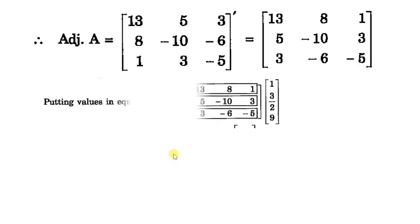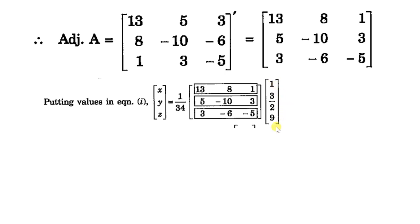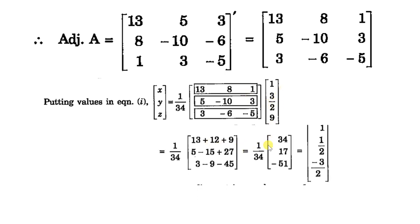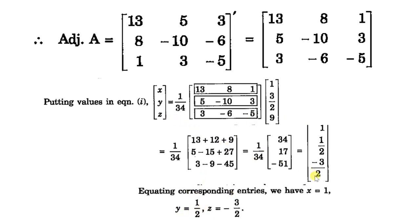Then x equals 1 over 34 times adjoint A multiplied by B. We multiply the 3×3 adjoint matrix by the 3×1 matrix B to get a 3×1 result. Multiplying the first row gives 13 plus 8 times (3/2) plus 1 times 9. Similarly, we get the second and third elements, dividing each by 34. We get 1, 1/2, and minus 3/2. By the equality of matrices, equating corresponding elements: x equals 1, y equals 1/2, and z equals minus 3/2.